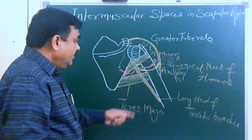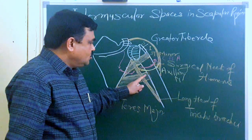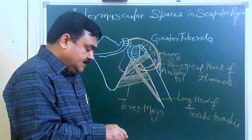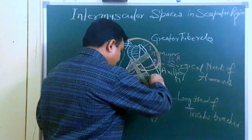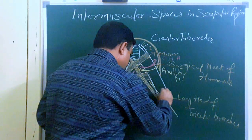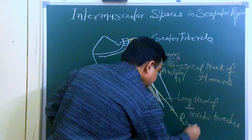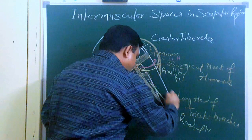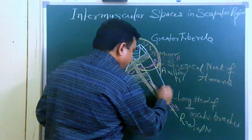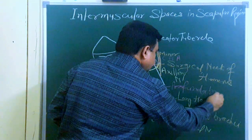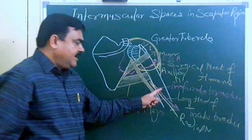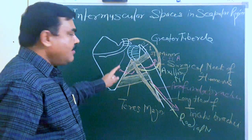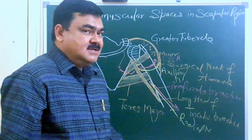This is the lower triangular space. It is laterally bounded by the shaft of the humerus, superiorly by teres major, and medially by the long head of the triceps. Its contents are the radial nerve and the profunda brachii artery. So these are the contents of the lower triangular space. This is all about the intermuscular spaces in the scapular region.